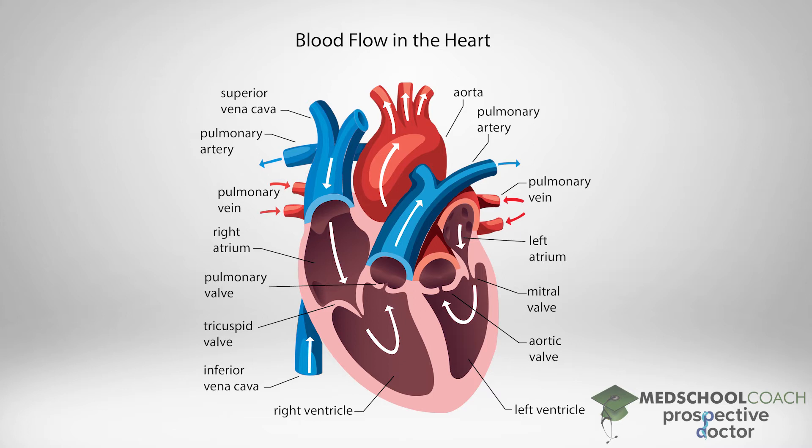With that valve, the blood continues to move from the right ventricles into the pulmonary artery, passing through the pulmonary valve, which again has an important role of preventing the blood from moving back from the pulmonary artery into the right ventricle.